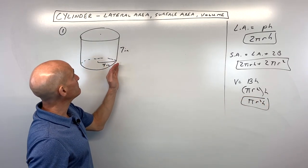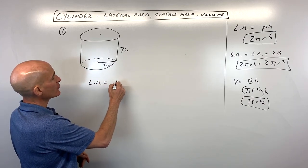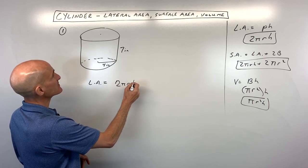Let's go ahead and do this problem. For number one here, we want to find the lateral area, which is the perimeter of the base, 2πr, that's the circumference, times the height.